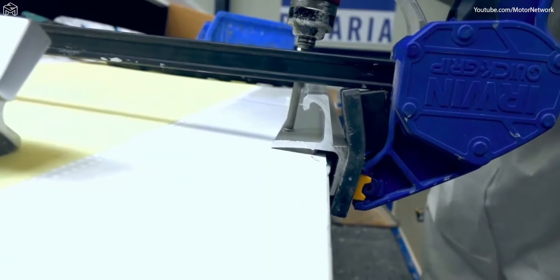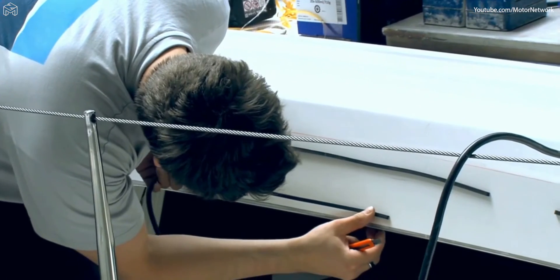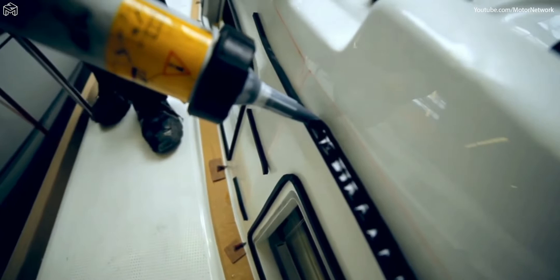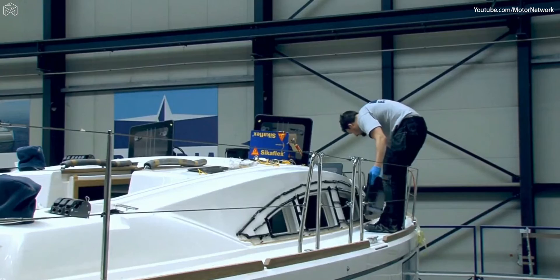The hull and deck windows are then installed in the yacht. Extreme care has to be taken to ensure that the windows are completely glued to the deck across the complete surface.